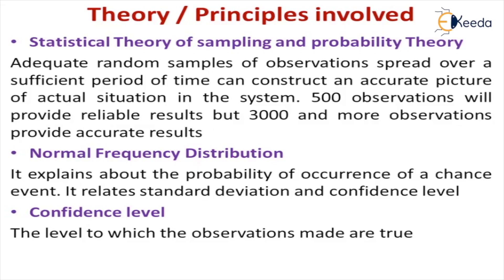Some random event, some random motion, some random operation may come into the picture. This probability of occurrence of that event is explained by the normal frequency distribution. Regarding confidence levels, the willingness of making the observation is the confidence level — how much the observation made is true to the depth of knowledge.